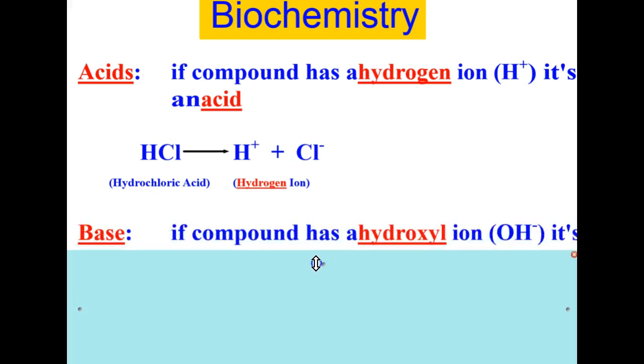The opposite of an acid is a base. You know a substance is a base if the compound has a hydroxyl ion. That is, it has an OH. And if it has that OH in its formula, you know it's a base.